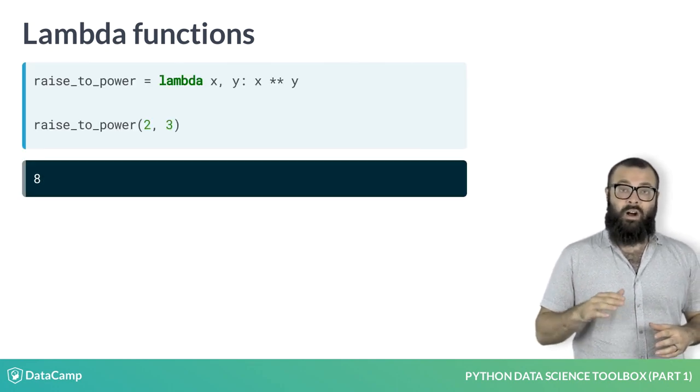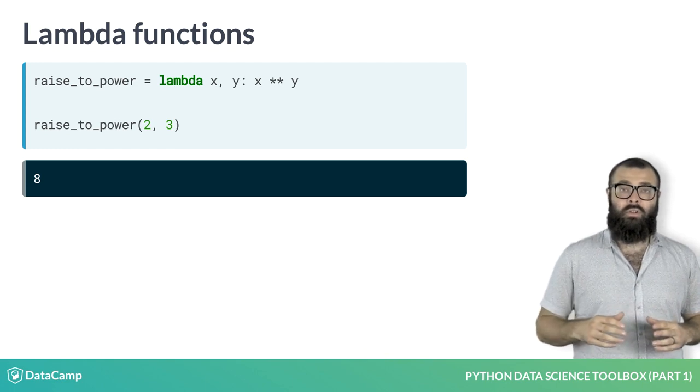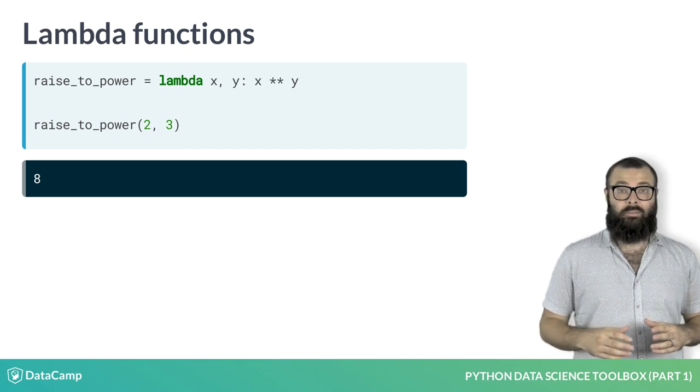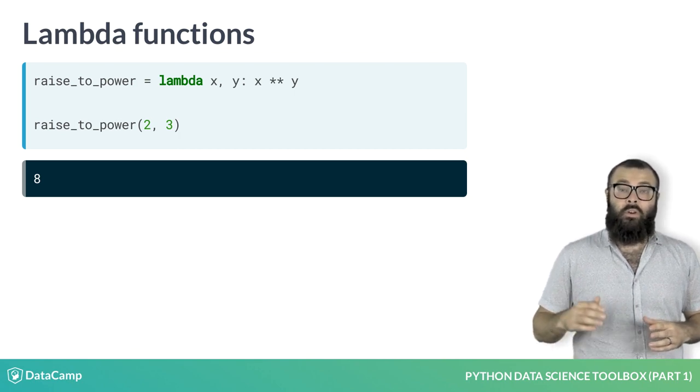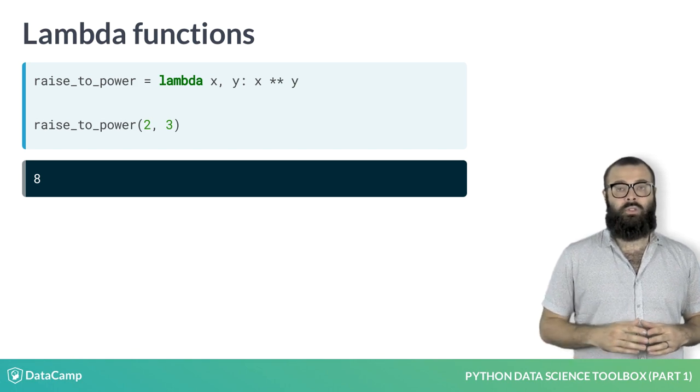Here, we rewrite our function raised to power as a lambda function. To do so, after the keyword lambda, we specify the names of the arguments. Then we use a colon, followed by the expression that specifies what we wish the function to return.